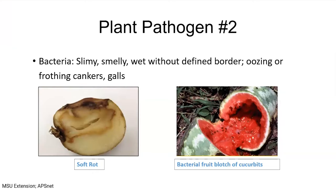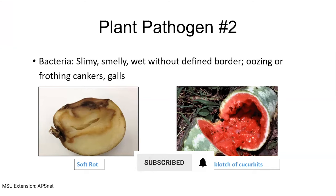The second one is bacteria. The traits of bacterial disease are slimy, smelly, wet without a defined border, oozing or frothing cankers, and sometimes bacteria can cause galls. Two examples are soft rot on potato and fruit blotch of cucurbits. They are very smelly — much more stinky than fungal rot.